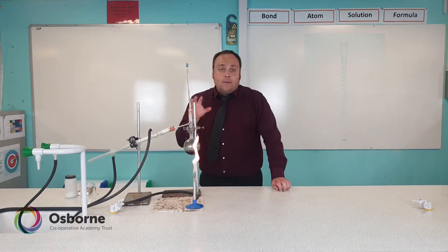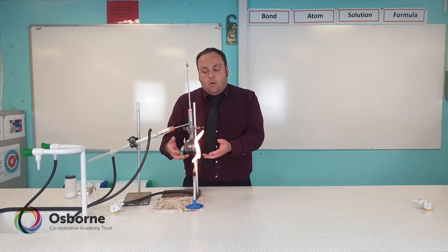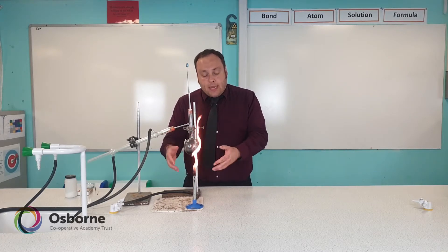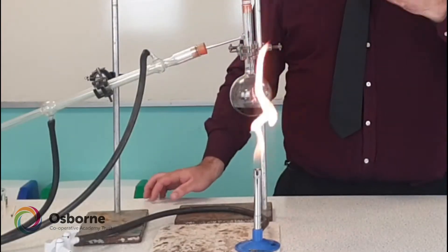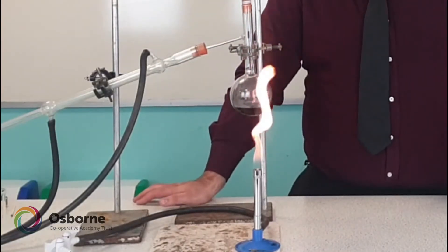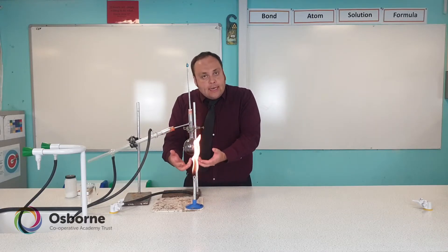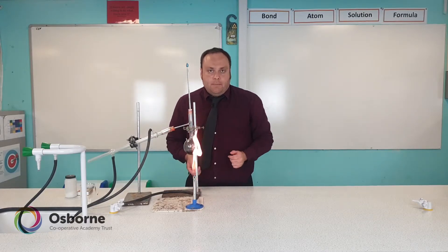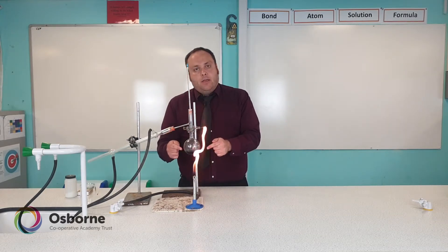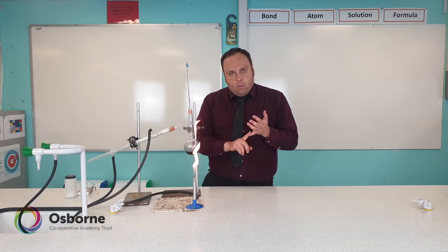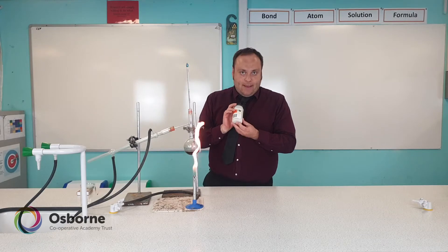For simple distillation, we put the mixture in something called a round bottom flask — it's called that because the bottom of the flask is round. We use it because it gives even heat distribution when the Bunsen burner is placed underneath. In this round bottom flask we have our ink and water mixture and also something called anti-bumping granules.